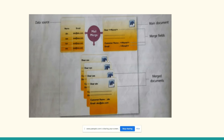As shown here, the left side is the data source and the right side is the main document with merge fields. The documents below are the merged documents in MS Word, which are already merged with recipient data.